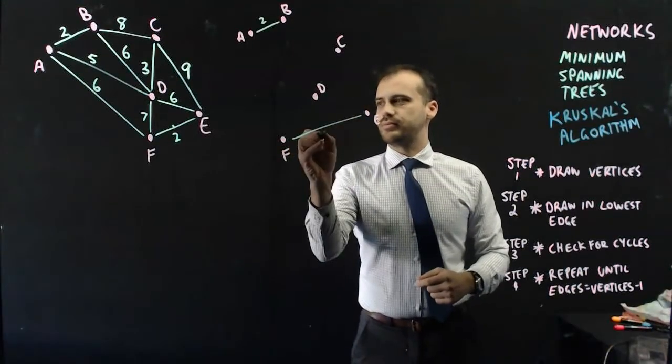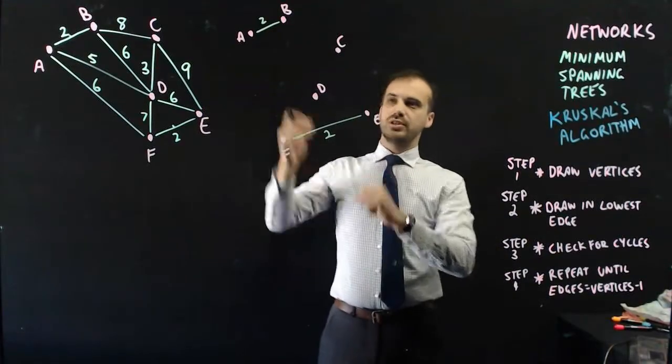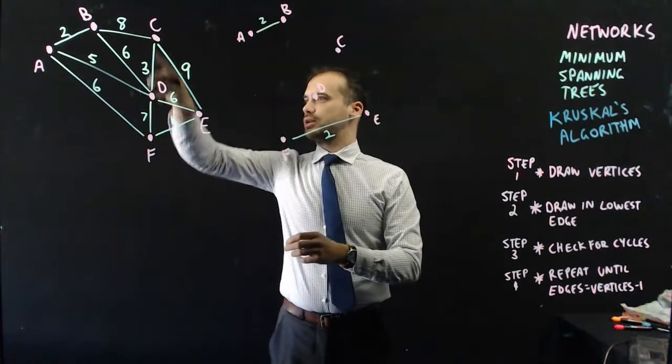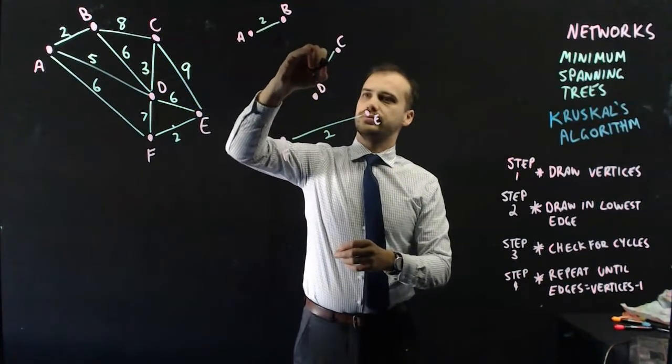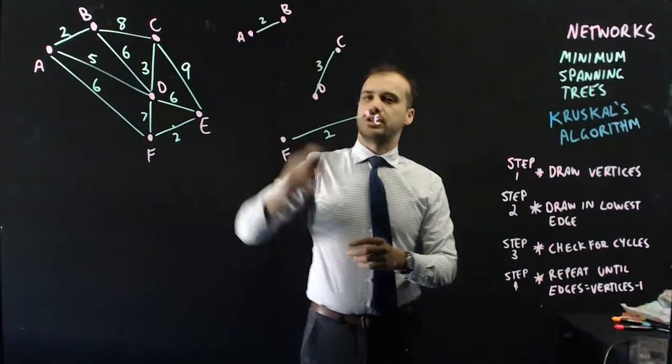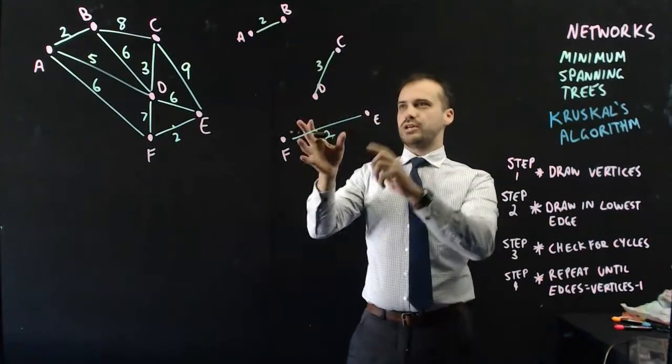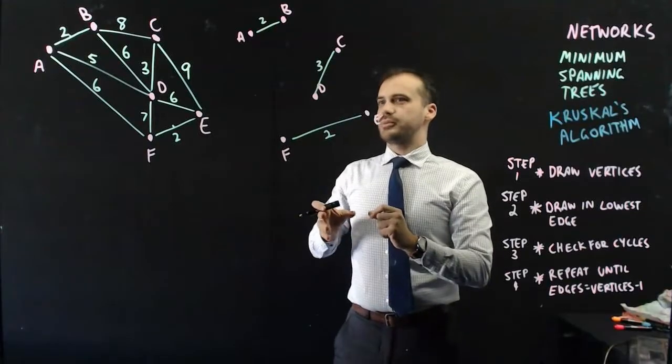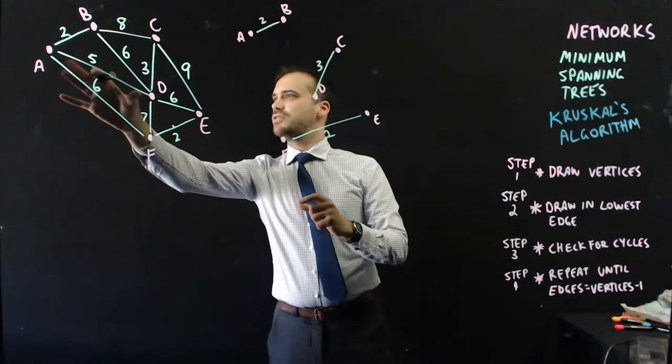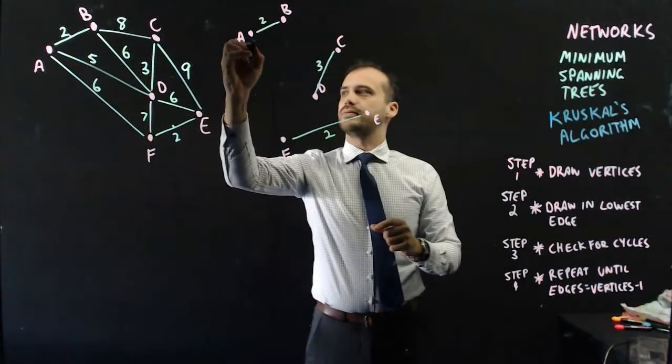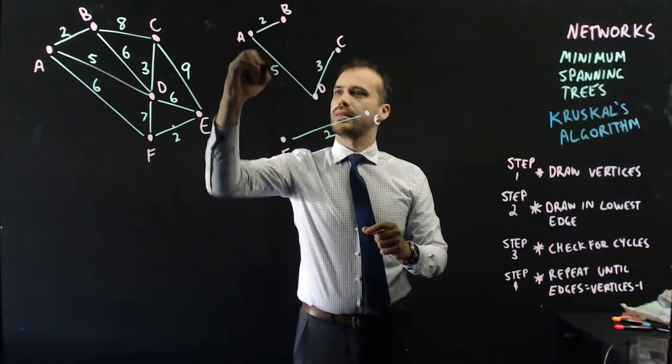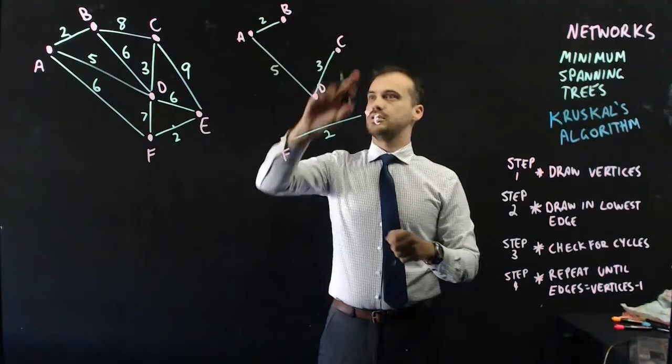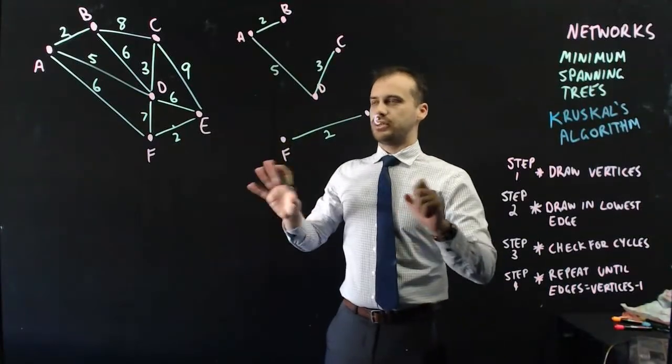F to E. That's a 2. Okay, check for cycles. Obviously not. Okay, 3. There's a 3 between C and D. Check for cycles. No, I've got this really nice, like, 3 disconnected graphs at the moment. Okay, what about, there's no 4s. There's a 5 here between A and D. Okay, now, check for cycles. No, no cycles. All right, we're okay.